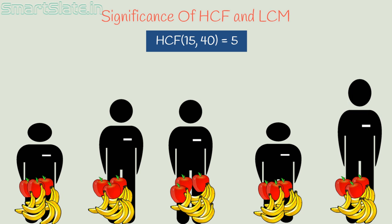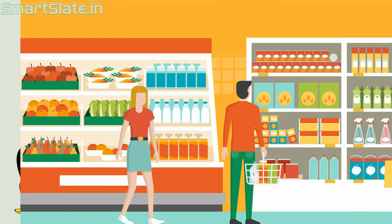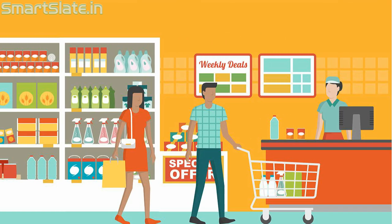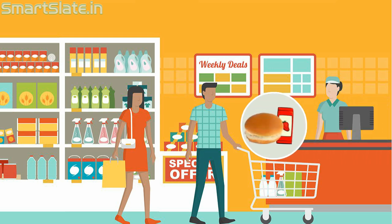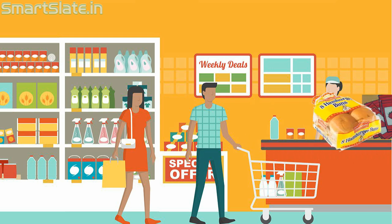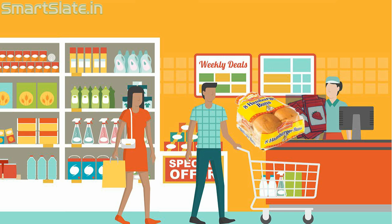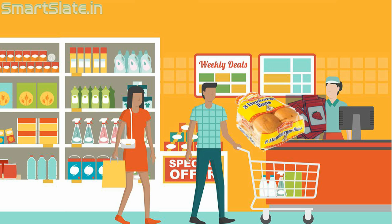Let me explain another scenario. You go to a grocery shop to buy jam sachets and buns for a tea party you are hosting at your home. You are going to serve your guests with a pair of bread and jam. Jams are available in a pack of 6 and buns in a pack of 8. So, what is the least number of buns and jams you need to buy so that neither jam nor bun is surplus?